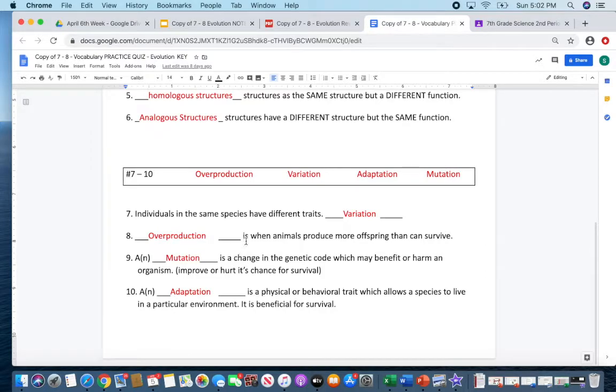Number eight, overproduction is when animals produce more offspring that can survive. Think of fish and amphibians. They lay thousands and thousands of eggs, and yet only a couple survive. This is another thing that helps drive evolution.